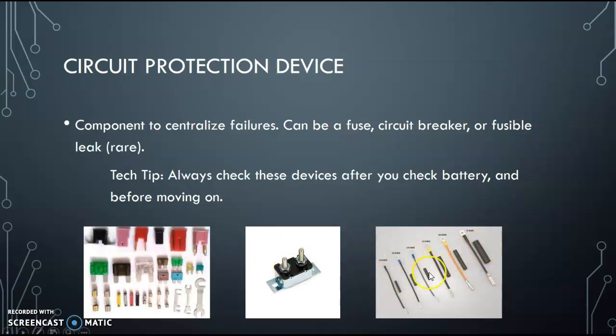Over here, these are your fusible links. And you're like, well, they look like wires. That's right. They are basically wires. They're really hard to find. They're kind of hard to diagnose because they're hidden so well. Basically, pulling them, they're kind of stretchy if they're blown. Again, inside there, it's just a design failure. The point of all these components is to centralize the failure and to protect the harness and components from either melting, catching on fire, damage, etc.